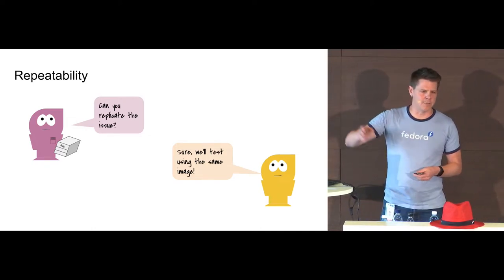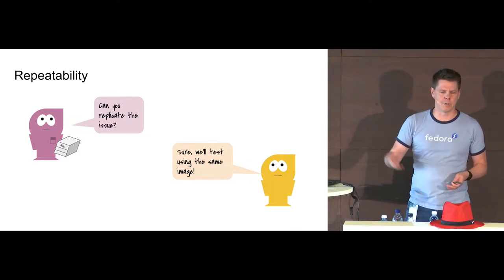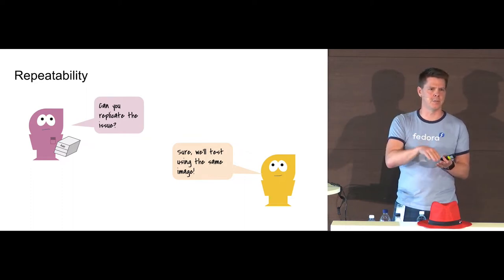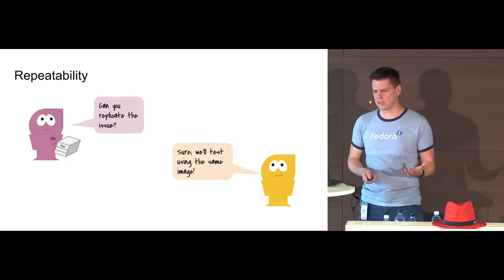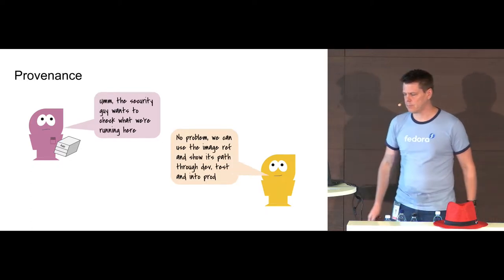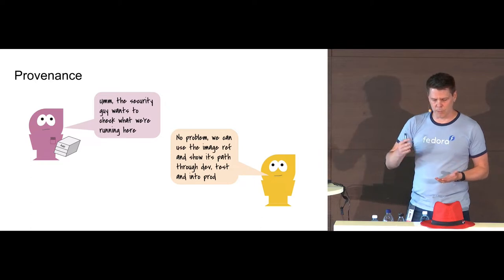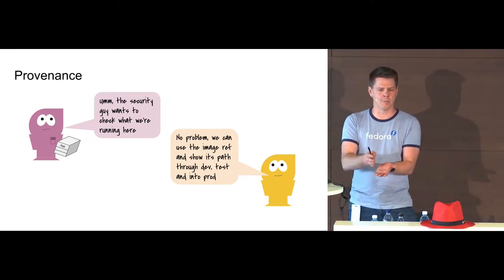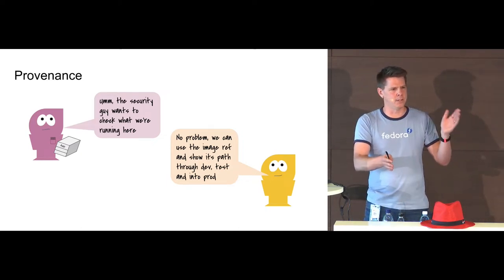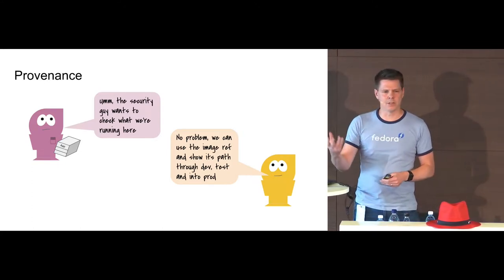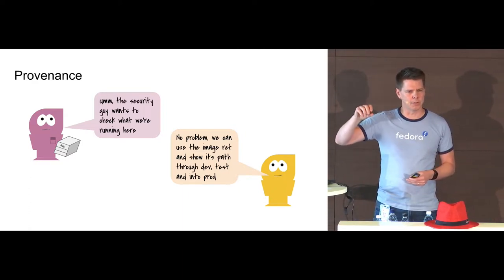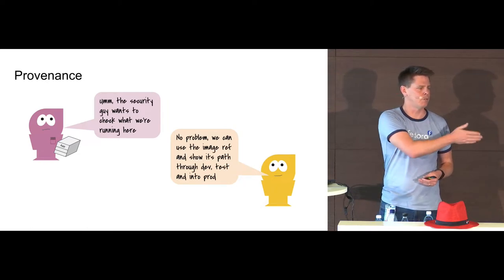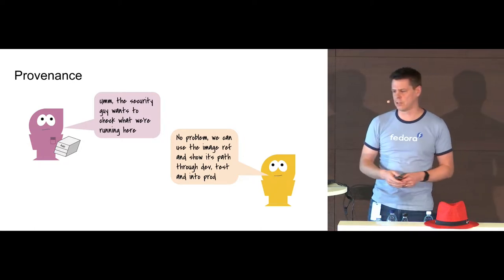Consistency also helps with debugging. If something goes wrong in production, we know the container image is immutable, so when testing in development we can link to exactly the same image running in production. Security teams can also audit what's running — we can sign containers so we know exactly what they are, and each container has a unique ID. You'll be able to reference all the governance gateways it has passed through to get into production.